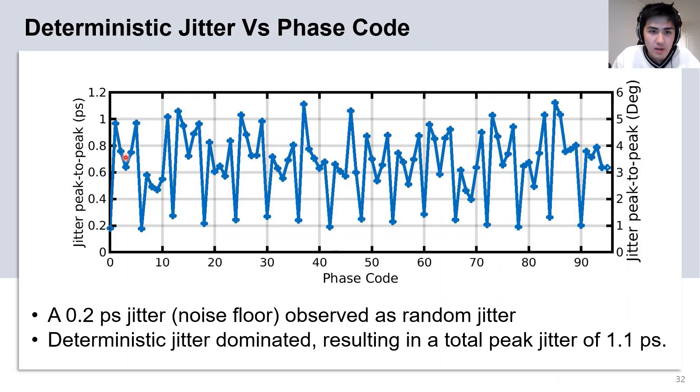Here we show the deterministic jitter of all 96 phase codes. Note that there is an approximately 0.2 picoseconds of noise floor, which can be observed as random jitter. However, the deterministic jitter dominates the overall jitter performance of the PI, resulting in a total peak jitter of about 1.1 picoseconds.